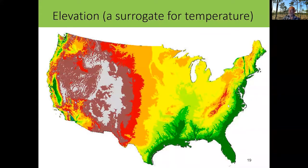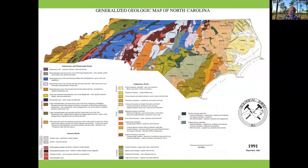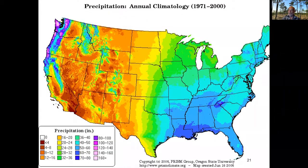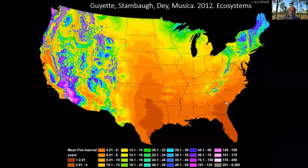Elevation serves as a surrogate for temperature — we have sea level up to the highest elevations in eastern North America, giving us a climate transect across North Carolina. The geology of North Carolina essentially includes all rock types present on earth, squeezed into its borders, giving very high geologic diversity. We also have climate diversity, with the highest rainfall areas east of the Pacific Northwest located in the southwest corner of NC — the Joyce Kilmer Highlands area — along with a diversity of fire regimes that shape vegetation and natural communities.